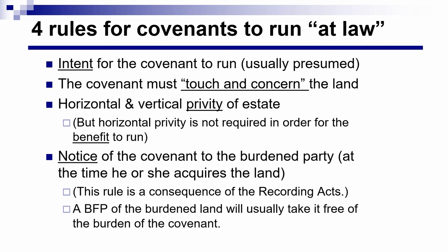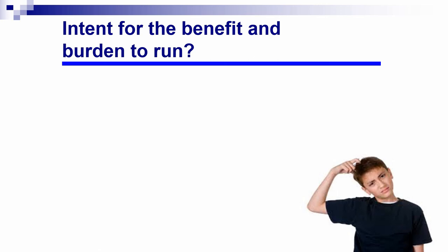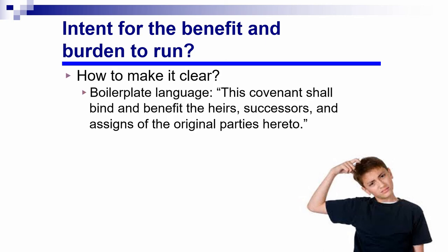Now we're going to take each of those four rules and break it down. The first rule is there must be intent for the benefits and the burdens of the covenant to run with the land. The most common way to show that intent is simply to look at the language of the original covenant. Particularly if drafted by a lawyer, it will usually have language something like this: 'This covenant shall bind and benefit the heirs, successors, and assigns of the original parties hereto.'